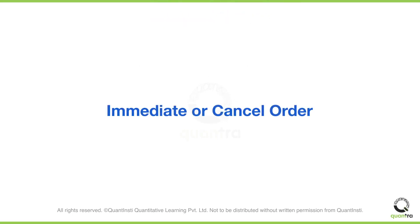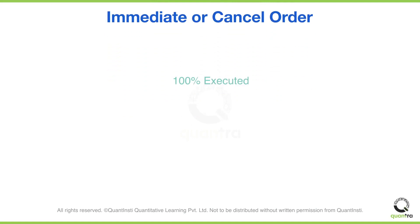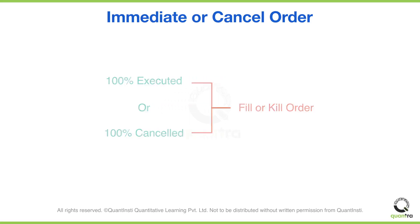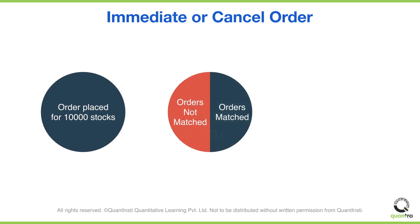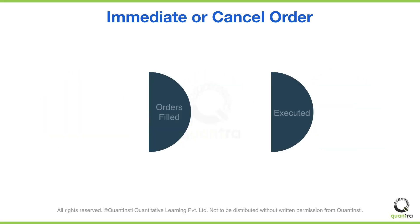When we say immediate or cancel order, what can you understand from it? Does it mean the order either gets fully executed immediately or is cancelled entirely? Not quite. This type of order that is either fully executed or cancelled is actually known as fill or kill. Let's say you want to buy 10,000 stocks and you place an order. If the exchange finds 10,000 sell orders, the entire order gets executed. But if it can only find 5,000, the entire order of 10,000 gets cancelled. Immediate or cancel is a little different — with IOC, even if your order is filled partially, it will get executed as long as it's an immediate fill, and the rest gets cancelled.